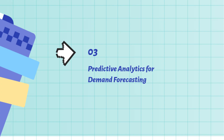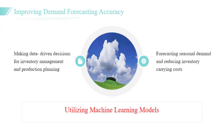Predictive analytics significantly improves demand forecasting accuracy, thereby reducing issues of overstock and stockouts. By utilizing machine learning models that analyze trends and consumer behavior, companies can make data-driven decisions regarding inventory management and production planning. For instance, a leading retailer successfully employed predictive analytics to forecast seasonal demand, which resulted in a 30% reduction in inventory carrying costs and improved customer satisfaction. This approach allows organizations to align their resources more effectively with market demand, which is crucial for maintaining a competitive edge.